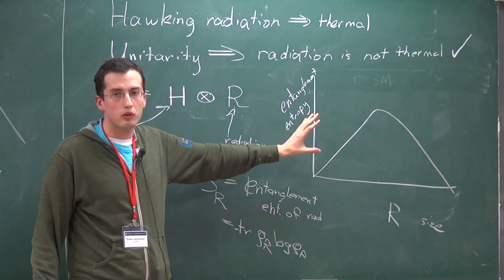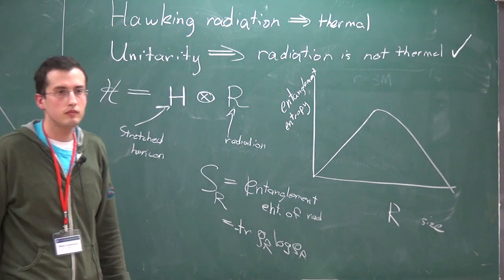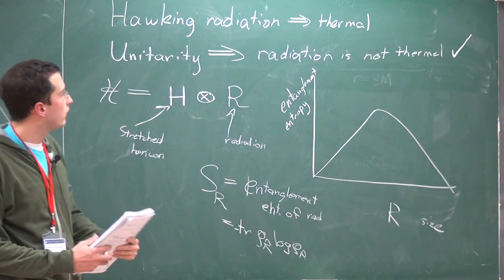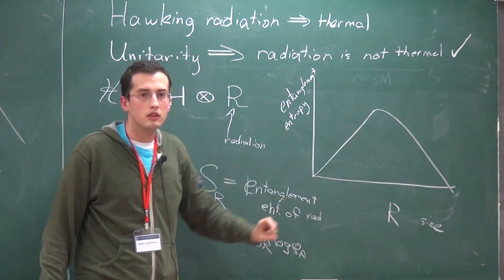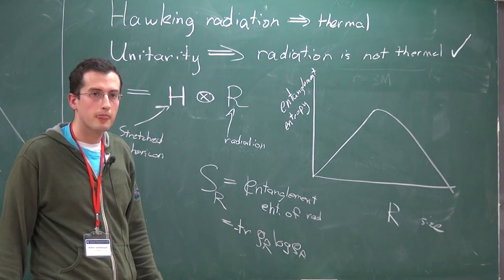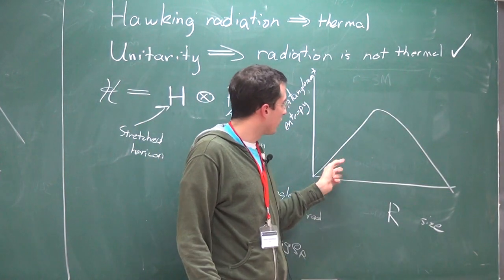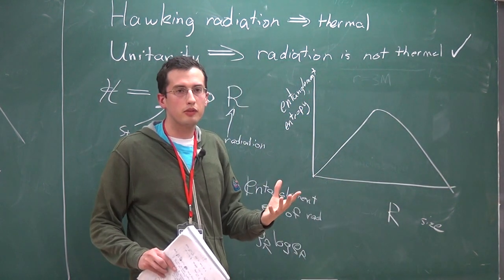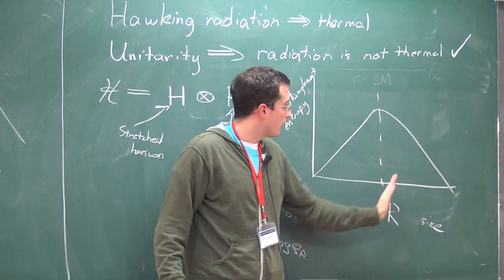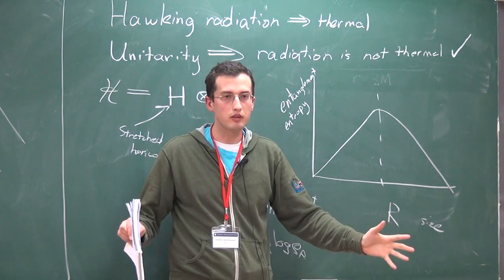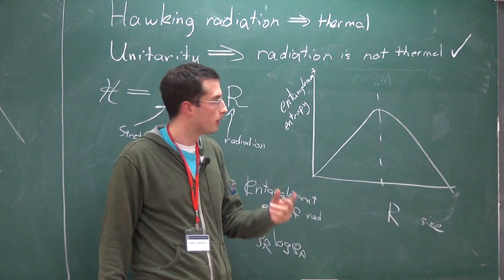There's still an attempt to solve the firewall by changing this. The firewall argument is a little more robust — it doesn't depend on this exact curve. All you need is that at some point the entropy goes down. The interesting thing about the random state result is that the point where it turns around is exactly when the system is half — when the entropy of the subsystem is exactly half the total entropy. For the firewall you just need it to go down, not necessarily reach zero.